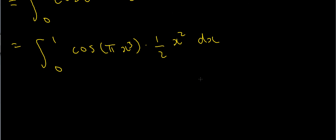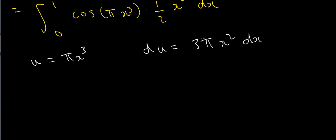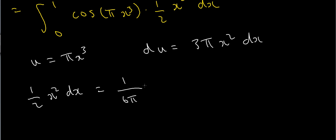Now I want to get rid of this pi x cubed term because I definitely can't integrate in this current form. So I let u equal pi x cubed. Differentiating with respect to x to complete the substitution, that tells me du equals 3 pi x squared dx. I want this to read as one-half x squared dx, so I divide by 3 pi and then by 2, giving me one-half x squared dx equals 1 over 6 pi du.